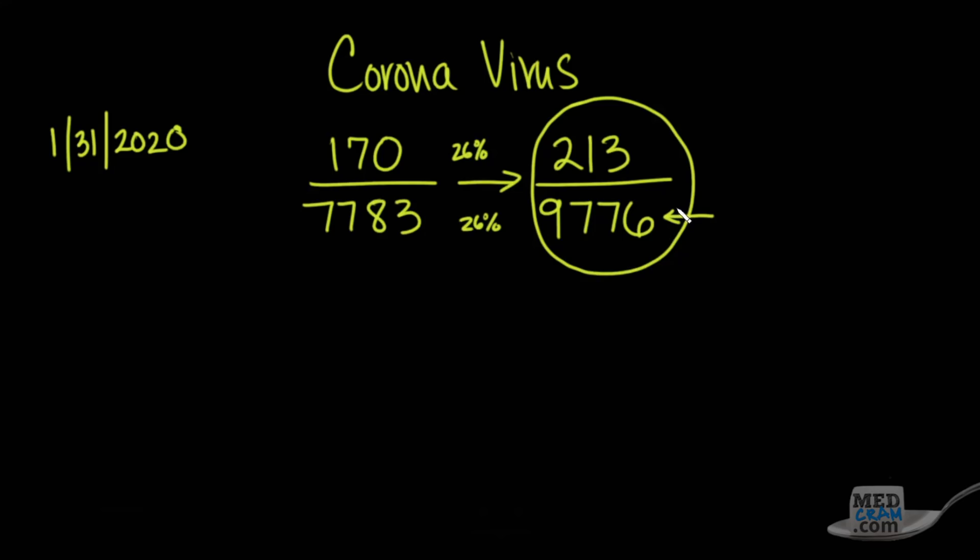Then this denominator down here is actually way bigger than we think it is. If that's the case, well, then this mortality rate is much less than 2%. It's hard to say exactly what it is at this point.